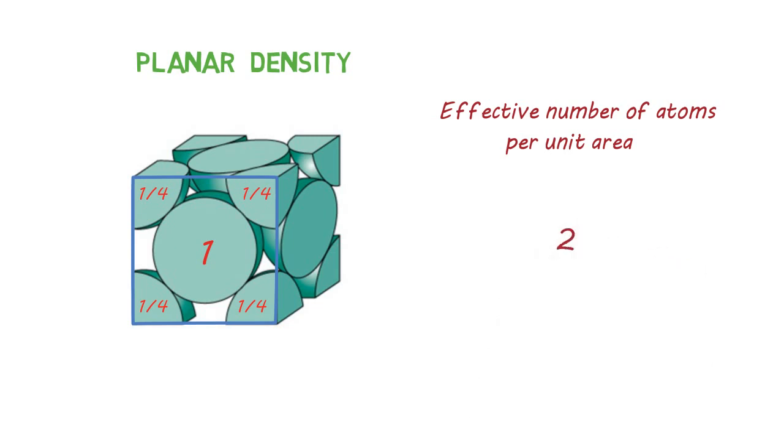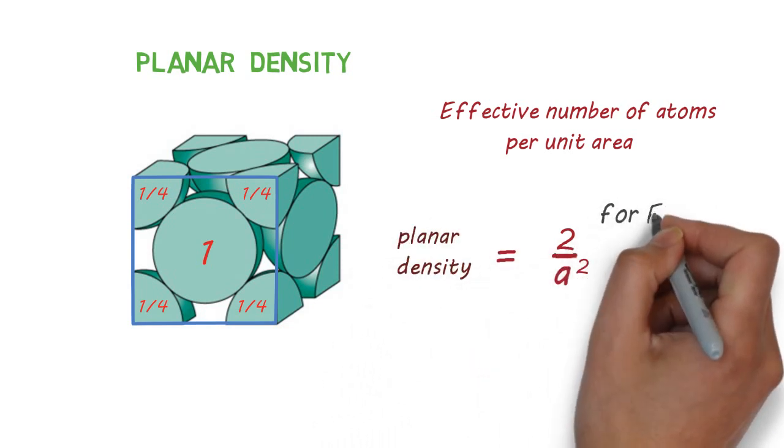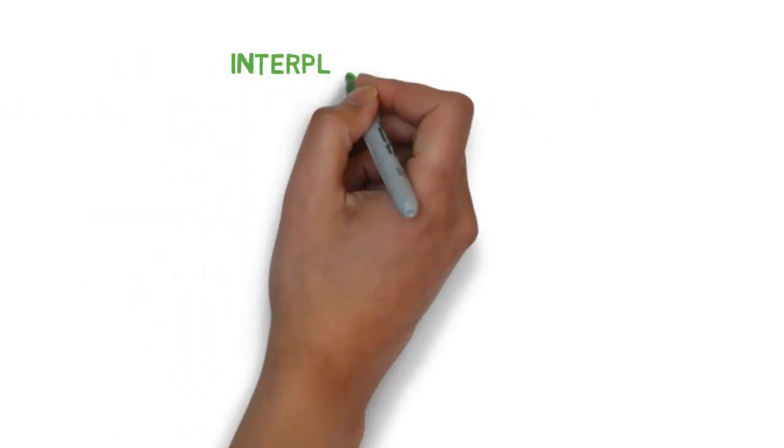So here total effective number of atoms will be 2 and the area of this plane is a squared. So planar density will become 2 divided by a squared for FCC. Its value changes for different planes and we can calculate that also very easily.